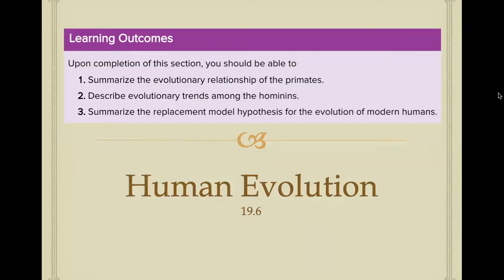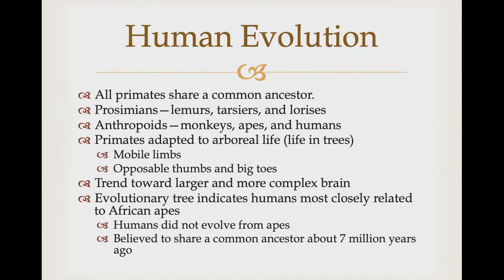That finishes section 19.5. The last section is 19.6, human evolution. Upon completion you should be able to summarize the evolutionary relationship of the primates, describe evolutionary trends among the hominids, and summarize the replacement model hypothesis for the evolution of modern humans. In the evolutionary tree, all primates share one common ancestor, and other types of primates diverge from the human line of descent over time. The prosimians include lemurs, tarsiers, and lorises; the anthropoids include monkeys, apes, and humans. The designation hominid includes the apes — both African and Asian — as well as chimpanzees, humans, and the closest extinct relatives of humans. The term hominin refers specifically to our species, Homo sapiens, and our close human-like ancestors.